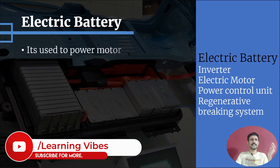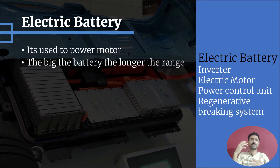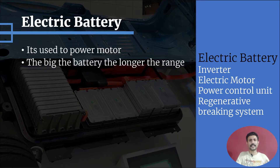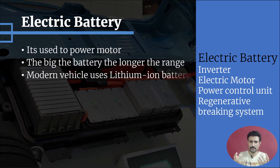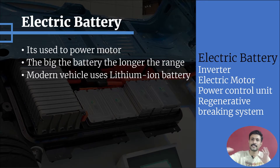First in the list is the electric battery. Electric batteries are used to power the electric motor. The larger the battery, the longer it can provide power to the motor. Just like a mobile phone — the larger the battery, the longer it will run. So the same thing applies here: the larger the battery in an electrical vehicle, the longer its range.